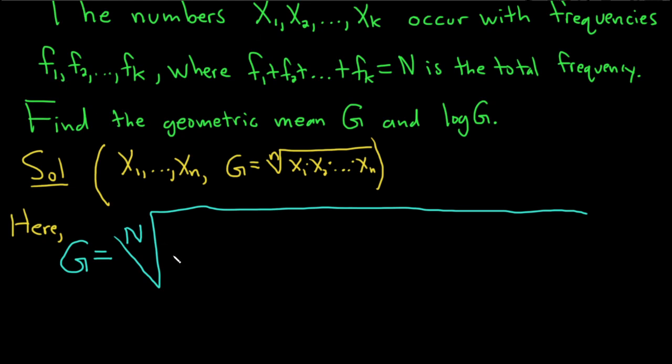So we have to write x1 times x1 times dot dot dot times x1, and it appears f1 times. So there's f1 copies of x1. This is f1 times.